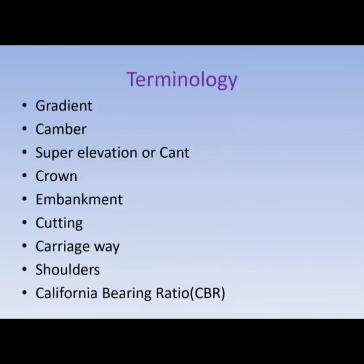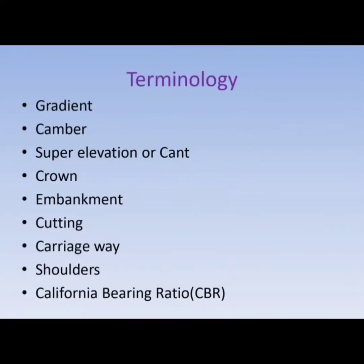The longitudinal slope of the road is called the gradient. It is required to meet different places at their different elevations. The transverse slope of the road is called camber, which is required for easy drainage of rainwater. At curves, the outer edges of the road are built at a higher elevation, which is called superelevation or cant, required to negotiate the centrifugal force of the running vehicle. The central high point of the road is called the crown.